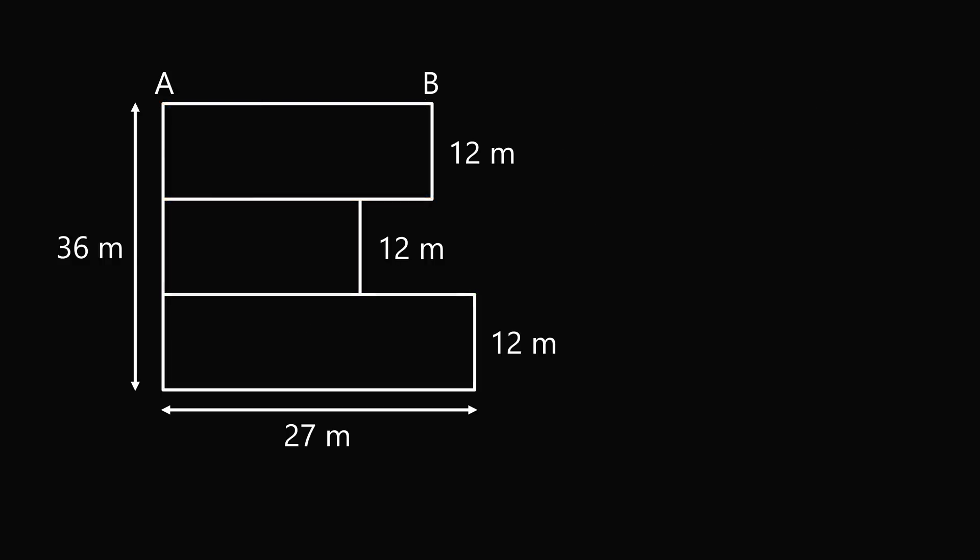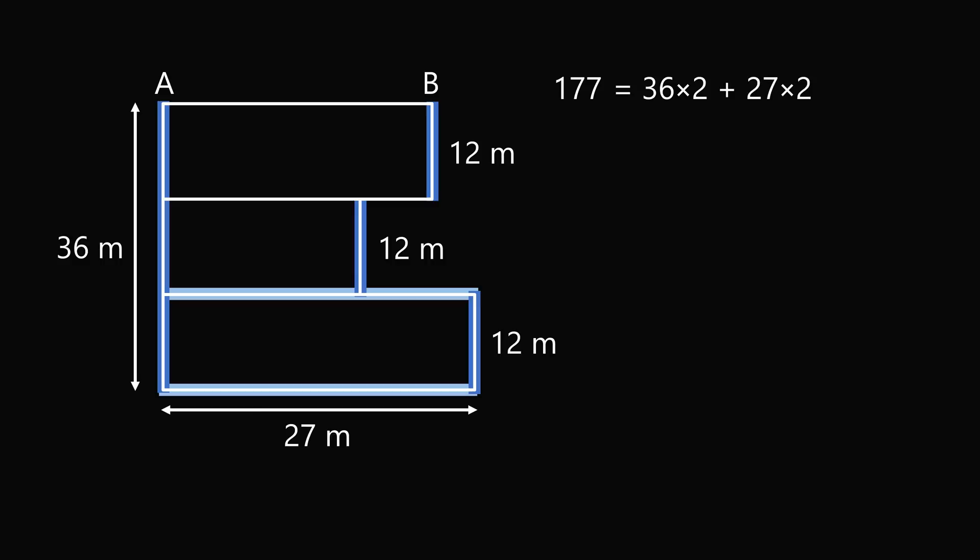So what's the total amount of fencing? Let's set up an equation. We have 177 that will be equal to 36 times 2 because we want to count both widths, then we'll add 27 times 2 because that will be 2 sides of this rectangle, plus we have AB multiplied by 2.